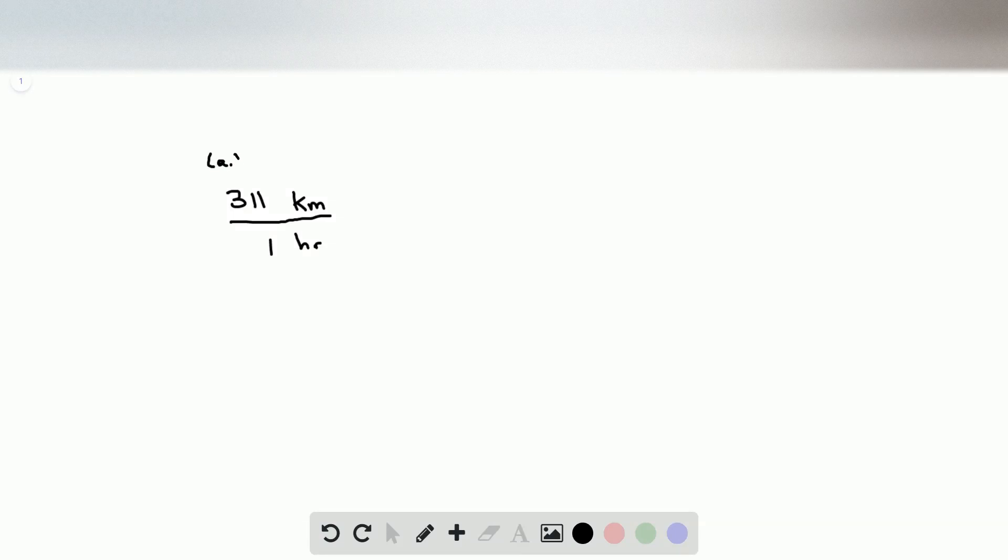In part A, we're asked to find the acceleration during the crash. The first thing to do is convert 311 kilometers per hour into meters per second. To do this, we multiply by the conversion factor.